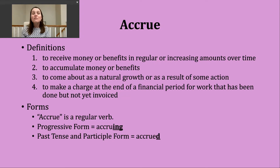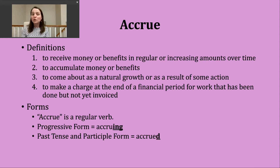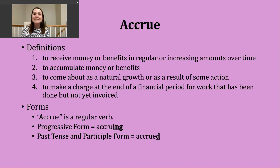You should know the verb accrue is a regular verb. To make the progressive form, we need to drop the E and add ING to form accruing. The past tense and participle forms can be made by just adding the letter D, since this verb already ends in an E. The base verb accrue ends in a vowel sound. Vowel sounds are always voiced sounds, so our past tense ending makes a D sound — accrued.